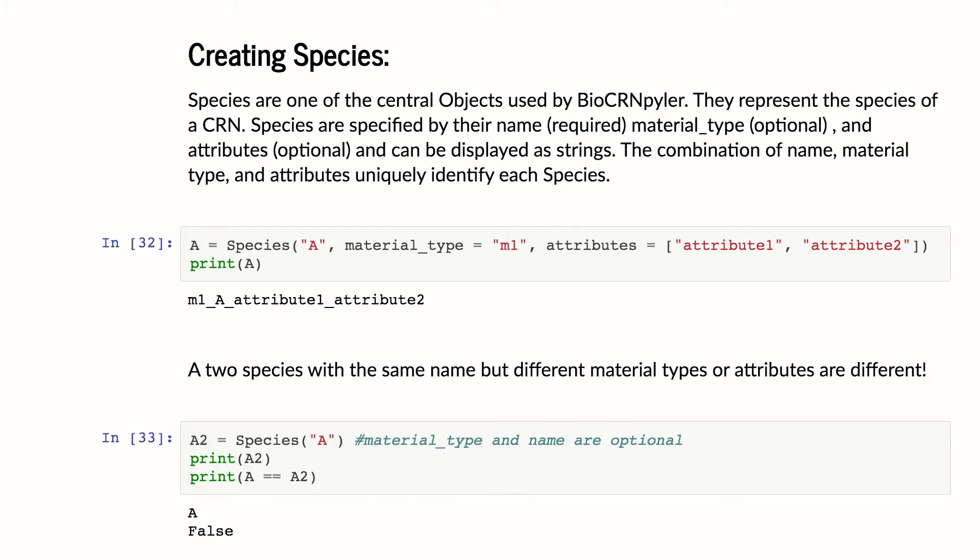Now I can make a second species with the same name, but material type and attributes are actually optional. And these two species will be different because even though they have the same name, they have different materials and different attributes. So I now make A2. I leave material type and attributes empty. I print it. It just says its name is A.